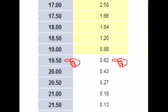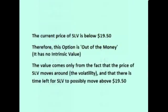The $19.50 strike costs $0.62 up front. This contract locks in a preset buy price of $19.50 for SLV over the next 6 weeks. SLV is currently $19.42, so this option is out of the money — it has no intrinsic value. The value comes only from the volatility of SLV's price and the fact that there is time for SLV to possibly move above $19.50.